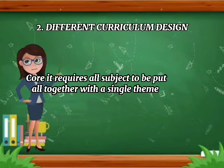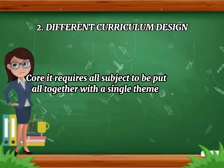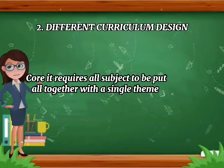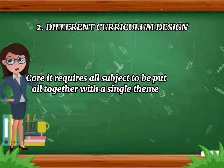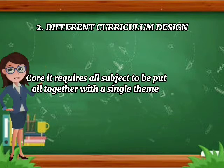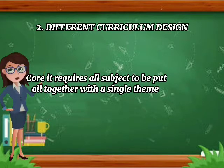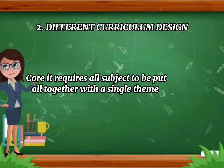Core integration requires that all subjects or disciplines in the school curriculum be put together using a single theme. Teachers organize curriculum around student questions and concerns, and students develop life skills applying both interdisciplinary and multidisciplinary skills in real-life contexts. This is used in preschool, for example in kindergarten, where students learn about self, family, and community using a single theme like 'All About Me.'